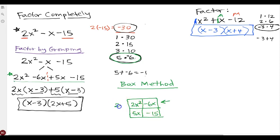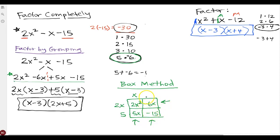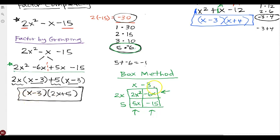Now look for greatest common factors in both directions. For the first row, the GCF of 2x squared and negative 6x is 2x. For the second row, 5x and negative 15 share a GCF of 5. Looking at columns: 2x squared and 5x share just x. For negative 6x and negative 15, since both are negative and 3 divides into both, it's negative 3. The factors come out to (x minus 3) and (2x plus 5).